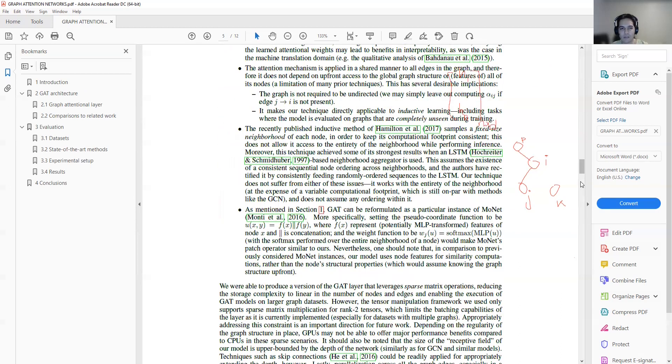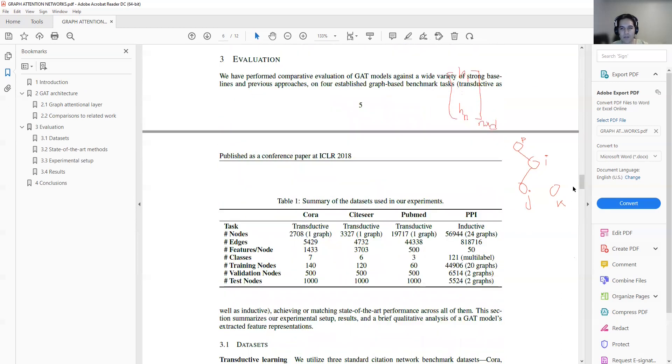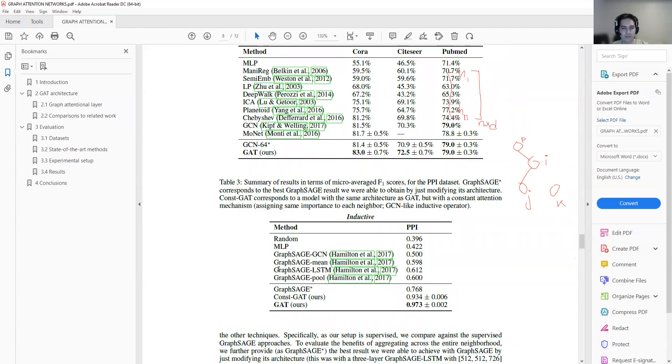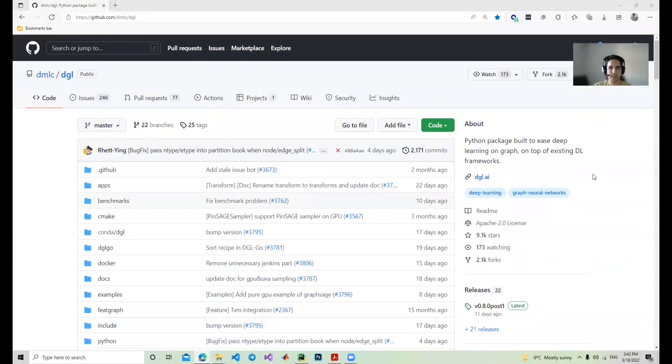If we see the result, they compare it with other papers, like the graph convolutional neural network, and even some of the advanced techniques like GraphSAGE based on LSTM. They achieved very good results. Let's start coding.